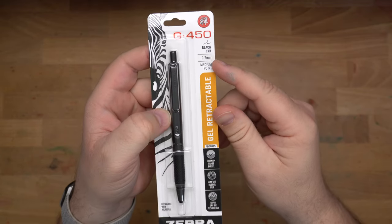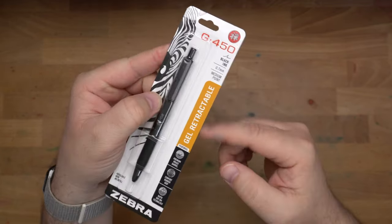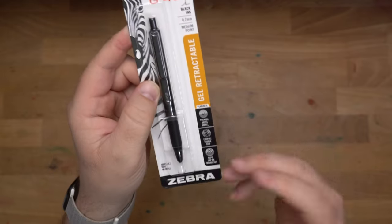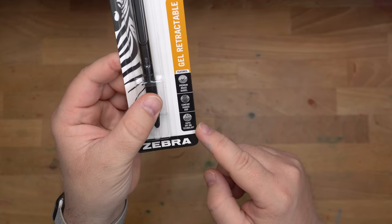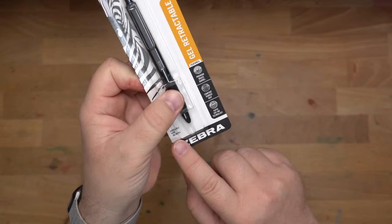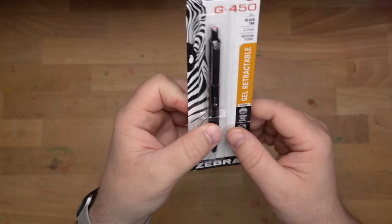This is black ink, 0.7mm gel pen, as it says here. It says it's medium point, that's pretty right I guess. Premium Brass Barrel Comfort Rubber Grip, and Rapid Dry Ink Technology, refillable with the JKL refill from Zebra.